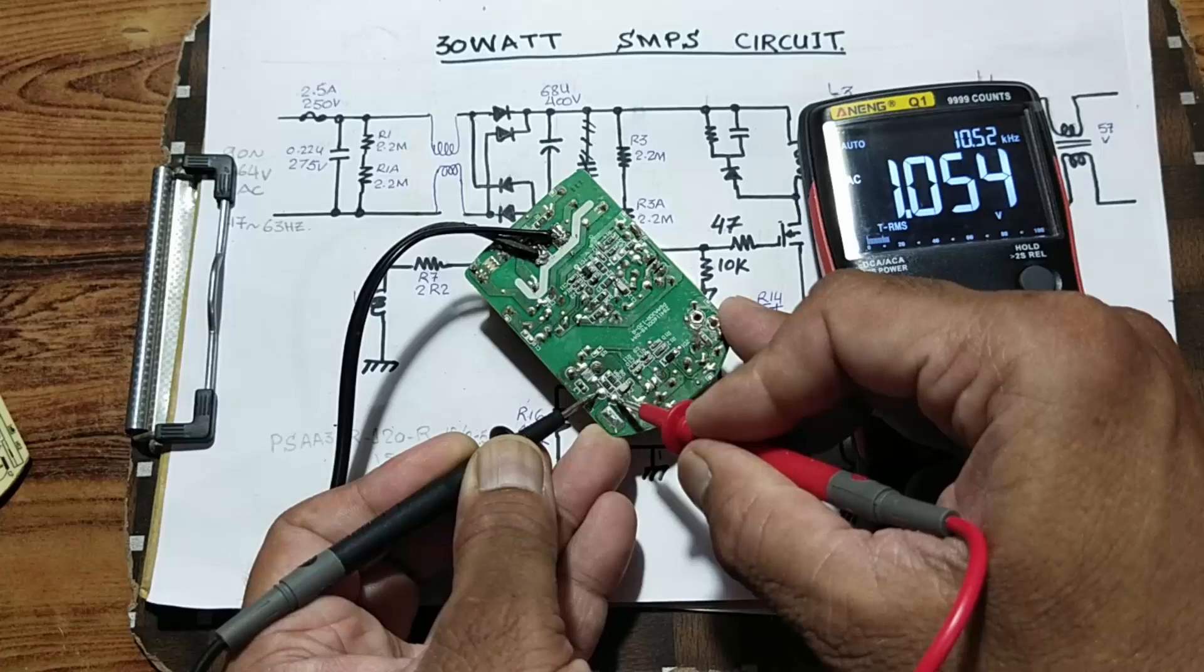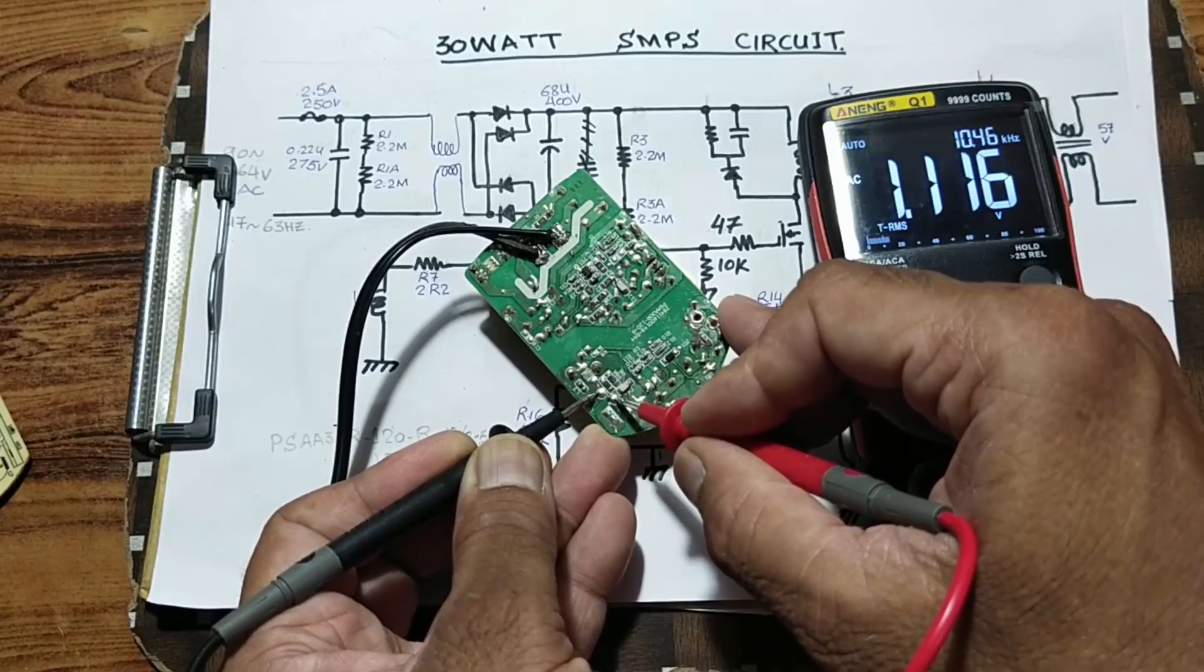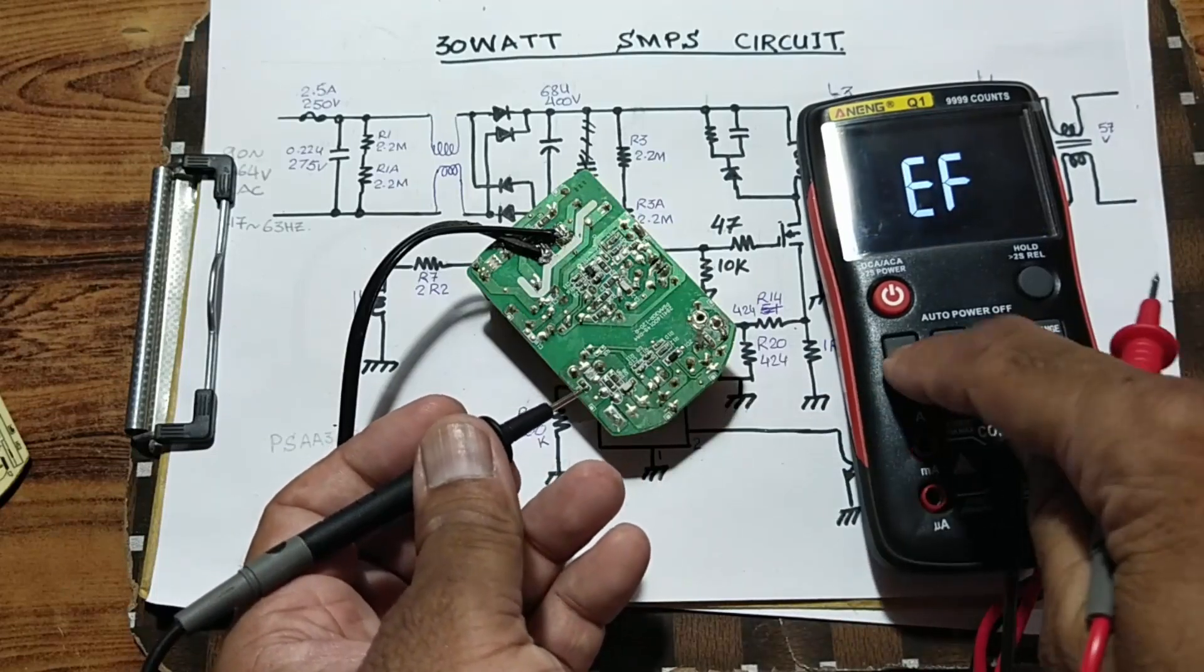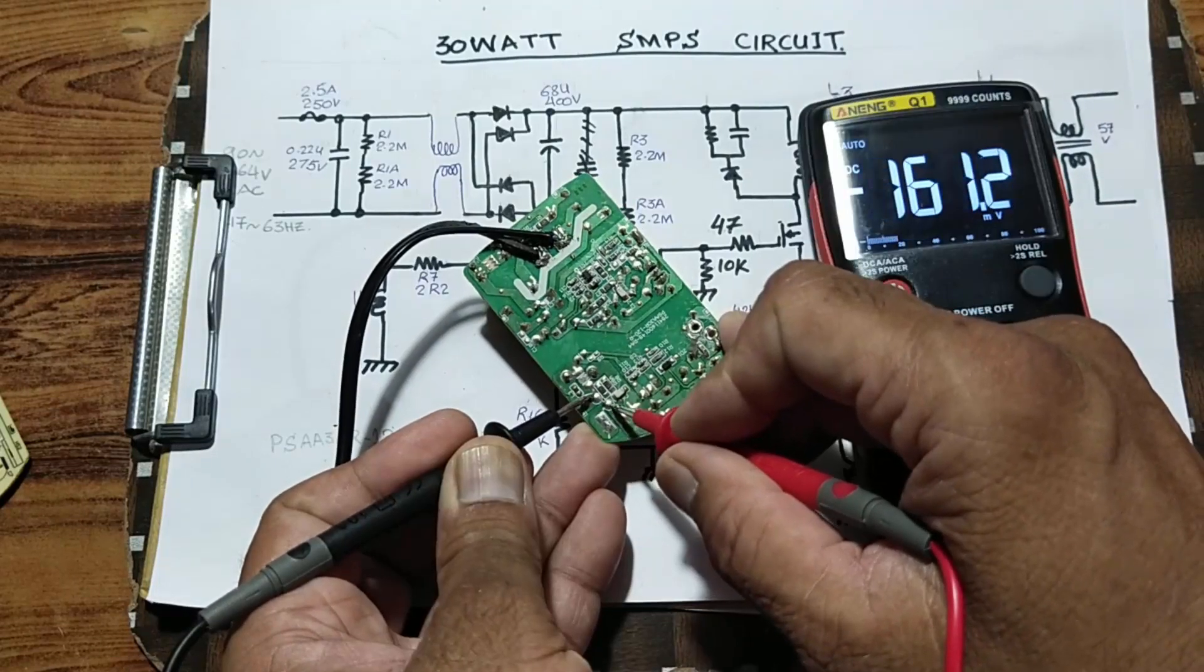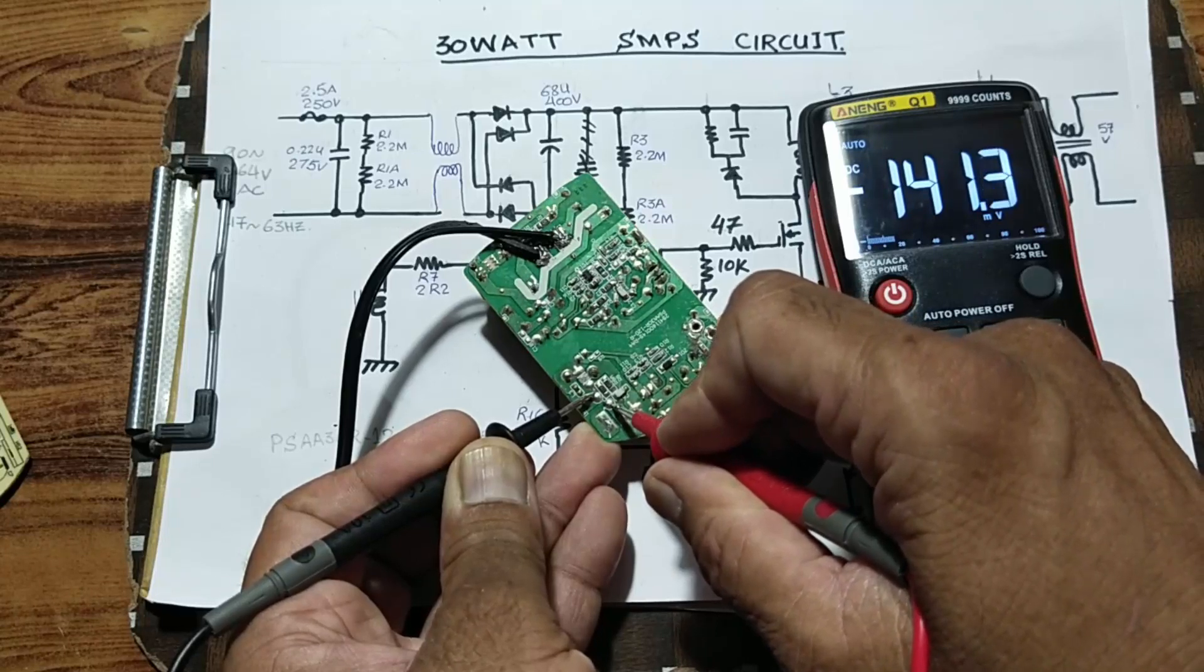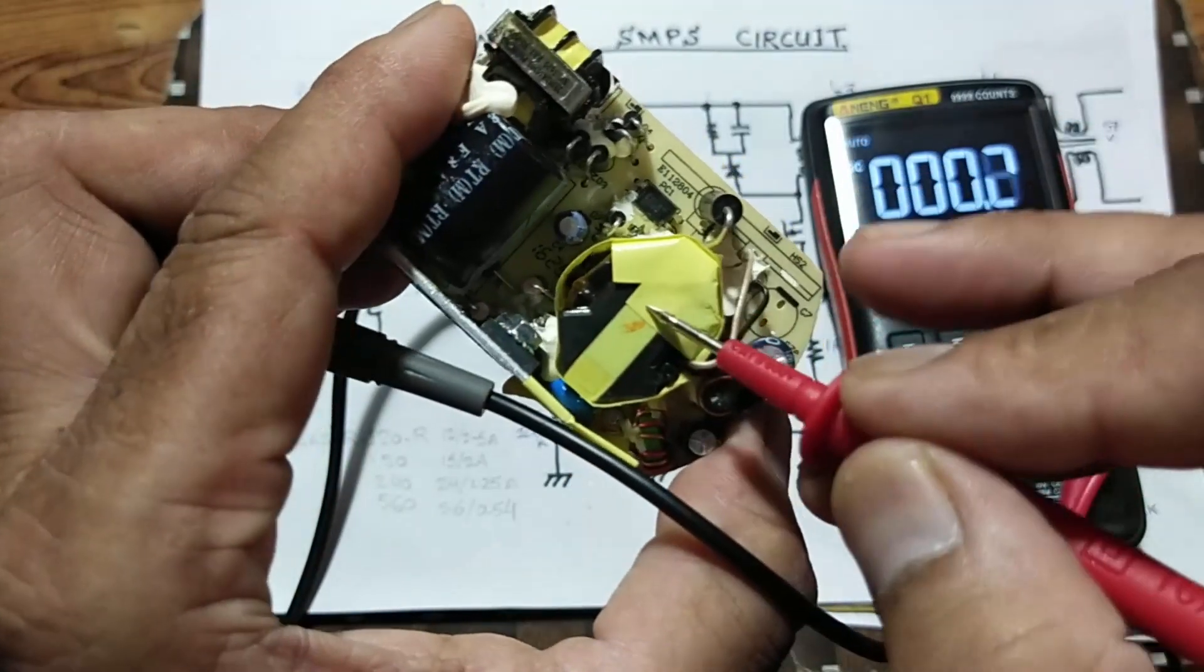Set multimeter to AC. This multimeter is showing 1.1 volt, sometimes it is giving 0 volt or in millivolt. We can check DC voltage. It will give millivolt, 141 millivolt.